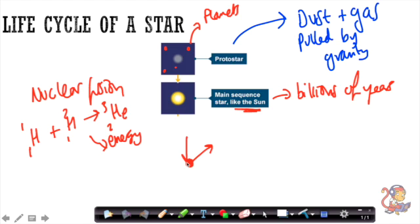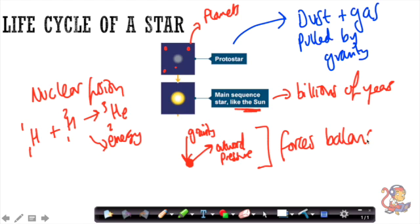You've got gravity pulling everything together and an outward pressure from the nuclear fusion pushing outwards, and these forces here are actually balanced. For billions of years we've got the gravity pulling in and the outwards pressure pushing outwards, and these forces are balanced, leaving the star in the same stage for such a long time.